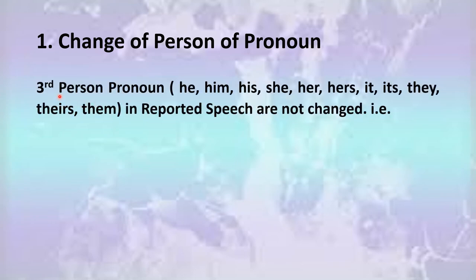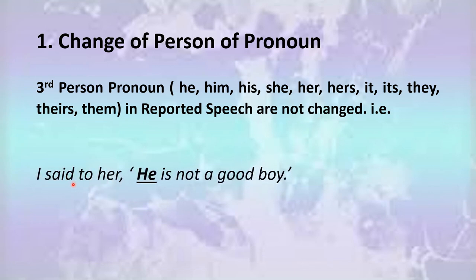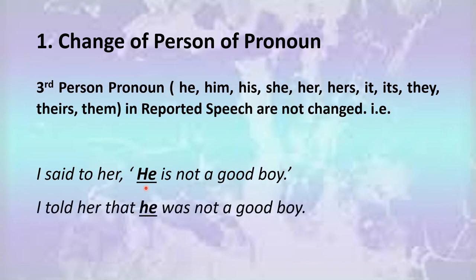The third person pronouns — he, him, his, she, her, hers, it, its, they, theirs and them — in the reported speech are not changed; they remain the same. See the example: I said to her, 'He is not a good boy.' He is the third person pronoun in the reported speech, so it will remain the same. The indirect sentence is: I told her that he was not a good boy. Said to is changed into told.